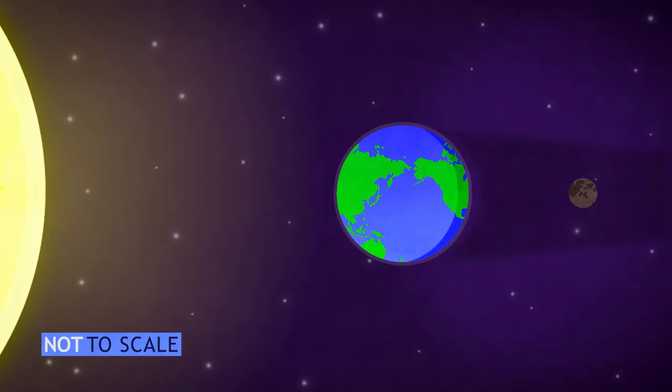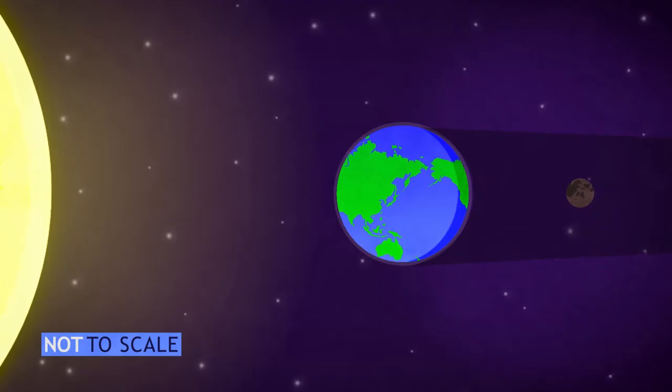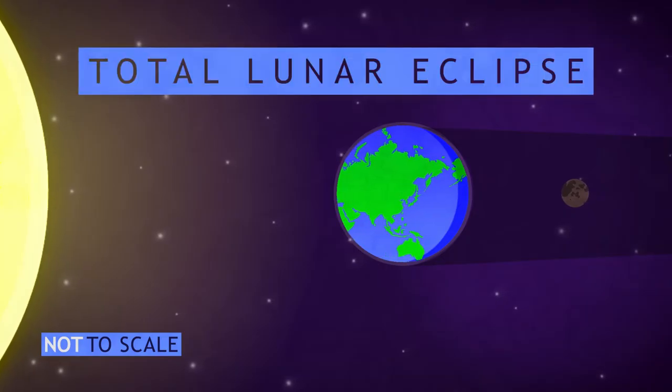If the moon passes completely inside the Earth's shadow, it goes totally dark with only a faint red glow. This is a total lunar eclipse, sometimes called a blood moon.